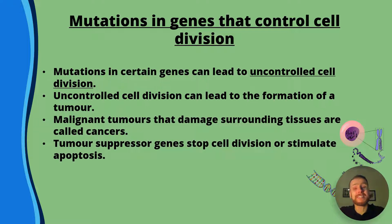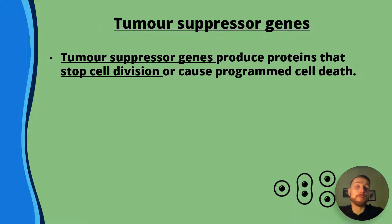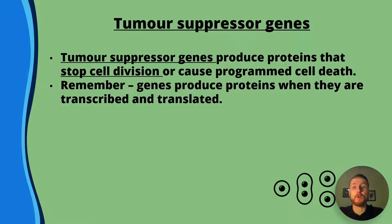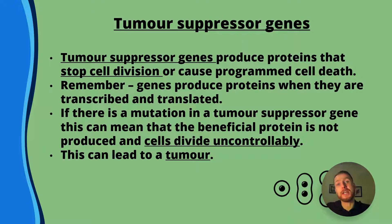Tumour suppressor genes stop cell division or stimulate apoptosis. It's actually good for our cells to die because we don't want them growing out of control non-stop, as that will lead to cancer. Tumour suppressor genes produce proteins that stop cell division or cause apoptosis — programmed cell death. Remember, genes produce proteins when they are transcribed and translated: transcription is where mRNA is produced from DNA, and translation is where a polypeptide is synthesized using that mRNA. If there is a mutation in a tumour suppressor gene, the beneficial protein is not produced and cells divide uncontrollably, which can lead to a tumour that is either benign or malignant.